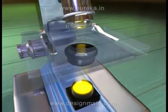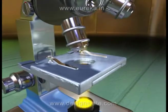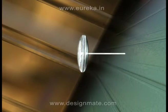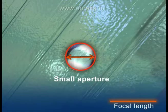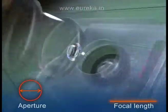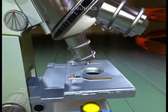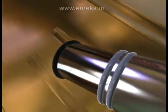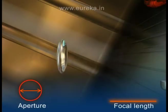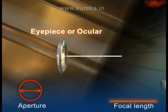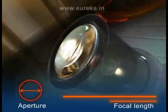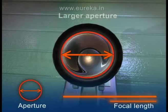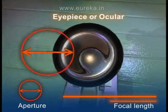In its simplest form, the compound microscope would have a single glass lens of short focal length and small aperture for the objective, and another single glass lens of comparatively larger focal length and larger aperture for the eyepiece or the ocular.